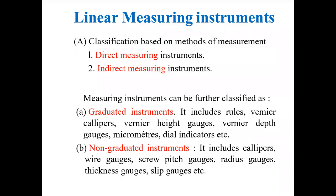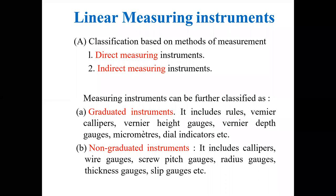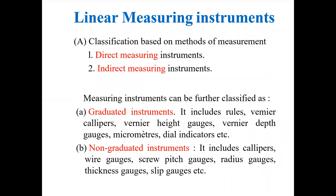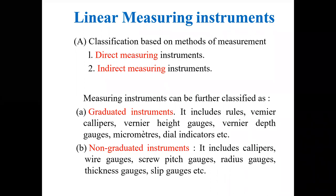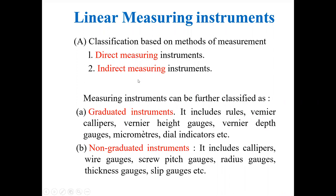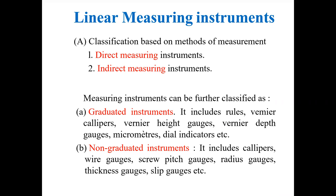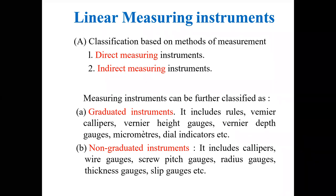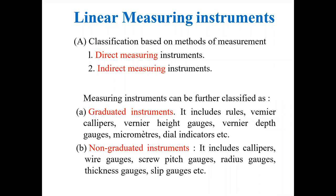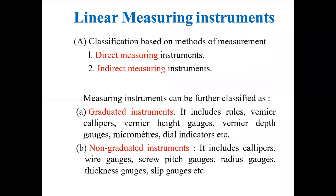Coming to instruments — standards are completed. Based on line standard and end standard, different measuring instruments exist. Classification of linear measuring instruments: based on method of measurement, there are direct measuring instruments and indirect measuring instruments. Direct measuring means the quantity to be measured is directly measured without any calculations or formula. If the instrument is used to measure a quantity without any calculation, that is a direct measuring instrument.